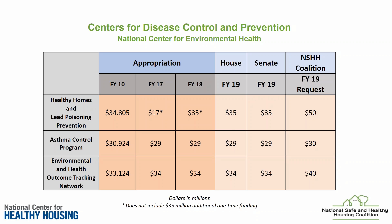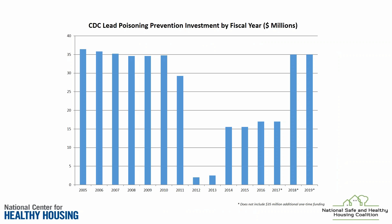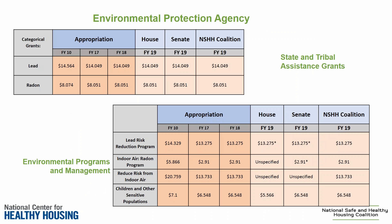At the EPA, in terms of lead, indoor air, and radon programs, they've stayed at level funding over the past several years, and the coalition has been happy about that. These programs have sometimes been targeted for cuts by various bills or budgets and have come under scrutiny, so we're happy to see level funding so far for fiscal year 2019 and will hope to continue to see those programs preserved.